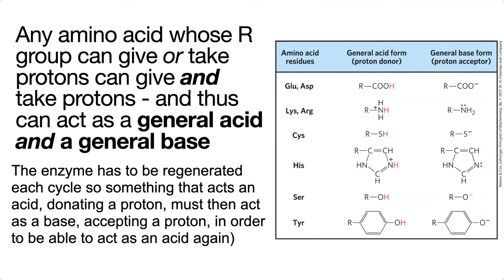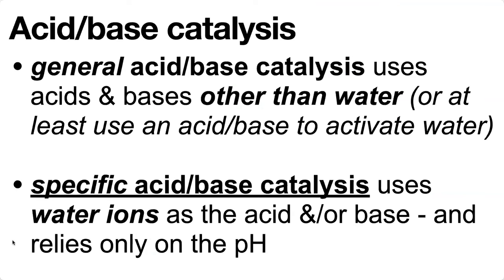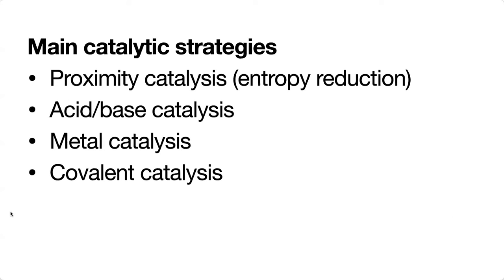Why would we actually want something to be giving and taking protons? This comes back to the idea of acid and base catalysis, which is one of the main catalytic strategies employed by enzymes. Enzymes are able to speed up reactions in a variety of different ways, including proximity catalysis — basically just holding things close together so they can find one another in the right orientation.